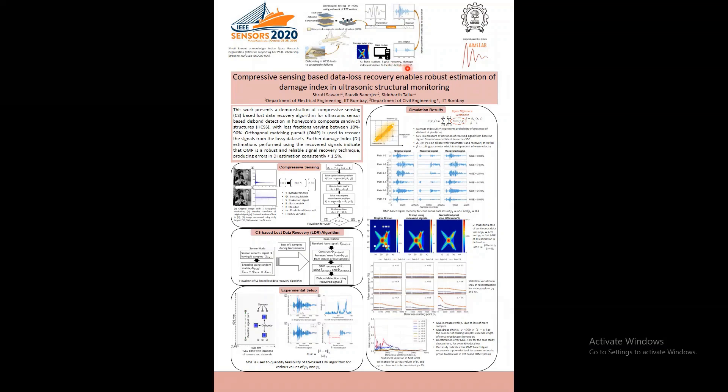At the base station, various signal processing tasks are performed to determine the presence of disbonds. In this work, we present a compressive sensing based algorithm for signal recovery in case of lossy transmission. Compressive sensing enables recovery of sparse signals using very few measurements compared to the Nyquist sampling rate. An algorithm called orthogonal matching pursuit is used to recover the signal from measurements.